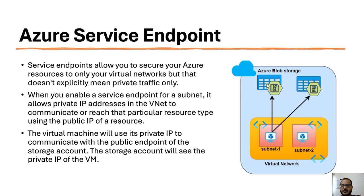I have created an Azure storage account as part of this virtual network and subnet. I have a virtual machine as part of subnet one and I want to connect to the storage account from this virtual machine. When we connect to the Azure storage account from this virtual machine, the storage account will see the private IP address of this virtual machine. But when traffic leaves the virtual network, it will still use the public IP address of the storage account.